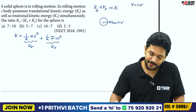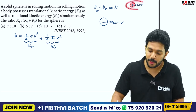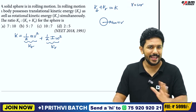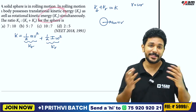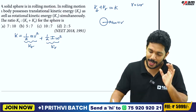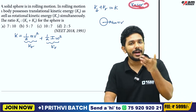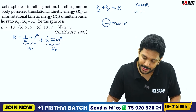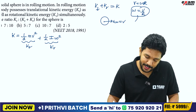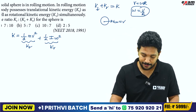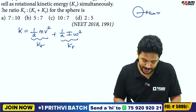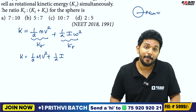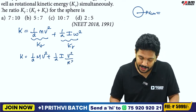Now, v is equal to omega r, where v is the center of mass velocity in pure rolling motion. All these questions assume pure rolling motion. If you see the center of mass velocity is equal to omega into r, then omega equals v by r. So we write: half M v squared plus half I times (v by r) squared.